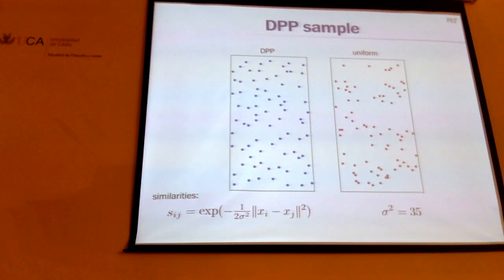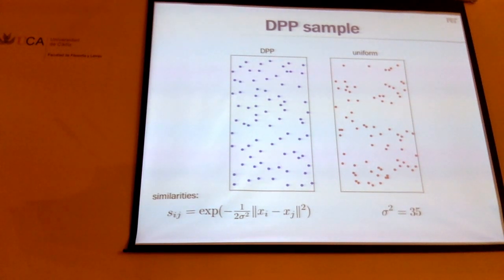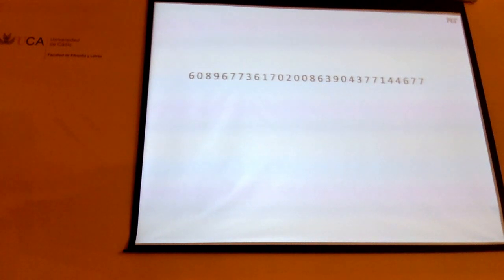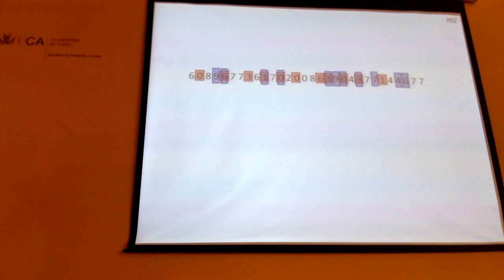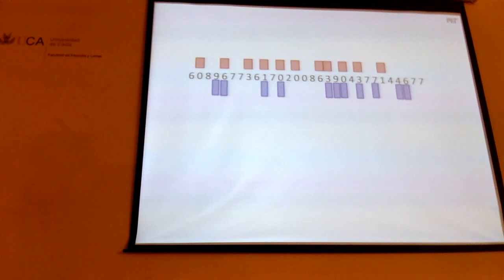To show this actually works: here is a sample where I take a Gaussian kernel over spatial locations. On the right hand side you see a uniform random sample; on the left hand side a sample from the DPP. The DPP sample is more spread out than the uniform sample. Similarly, if you take a sequence of random numbers and mark every time the sequence goes down — the set of locations is distributed as a DPP with a special similarity measure — and comparing it to uniformly random locations, the DPP locations are slightly more spread out. That's a special case of a probability distribution induced by a submodular function.